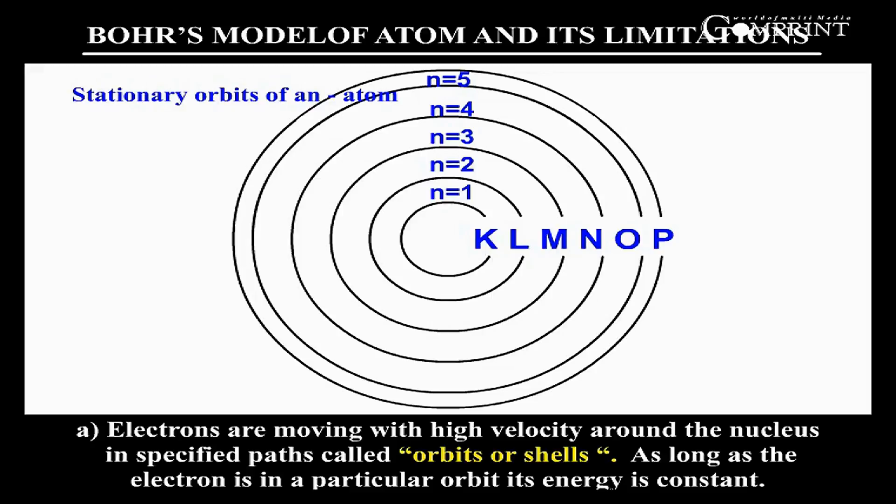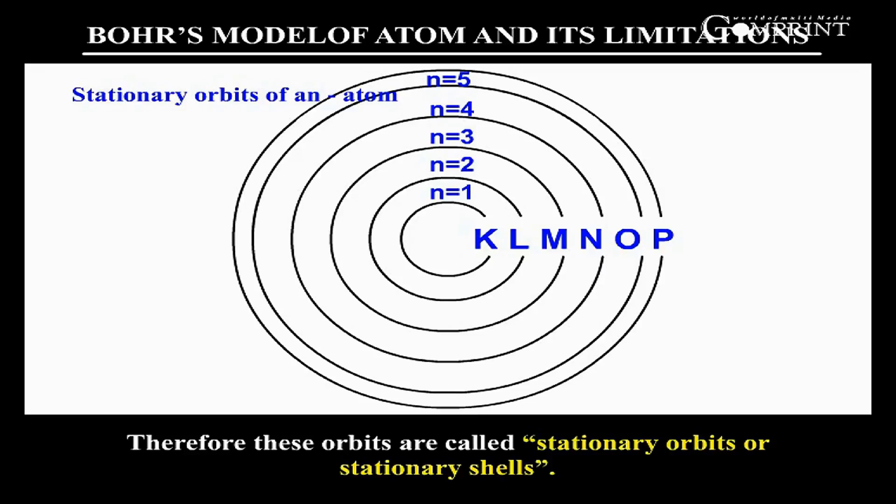Electrons are moving with high velocity around the nucleus in specified paths called orbits or shells. As long as the electron is in a particular orbit, its energy is constant. Therefore, these orbits are called stationary orbits or stationary shells.